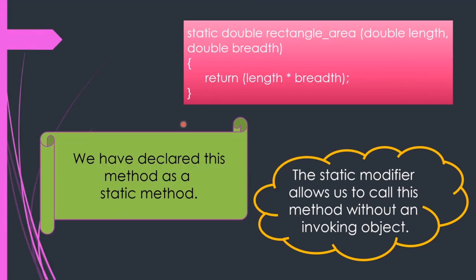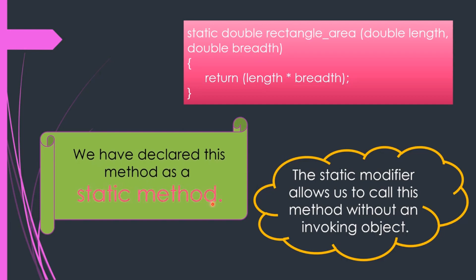The last topic we were discussing was static methods, which are related to invoking an object. Without invoking an object, we can call a static method. Now let us discuss how we invoke a method — all these things we are going to study in detail.